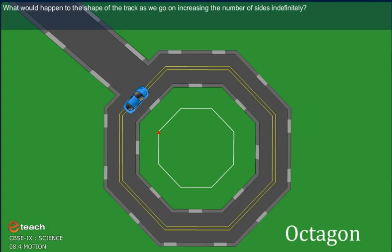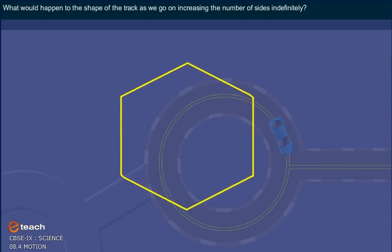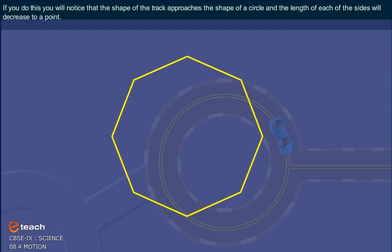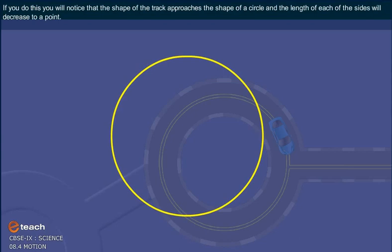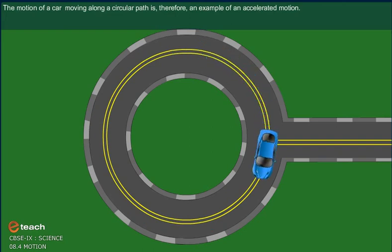What would happen to the shape of the track as we go on increasing the number of sides indefinitely? If you do this, you will notice that the shape of the track approaches the shape of a circle and the length of each of the sides will decrease to a point. If the car moves with a velocity of constant magnitude along the circular path, the only change in its velocity is due to the change in the direction of motion. The motion of the car moving along a circular path is, therefore, an example of an accelerated motion.